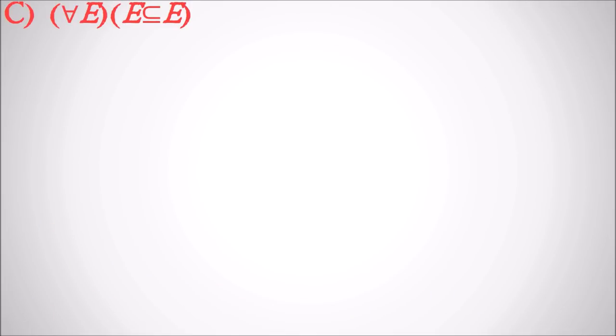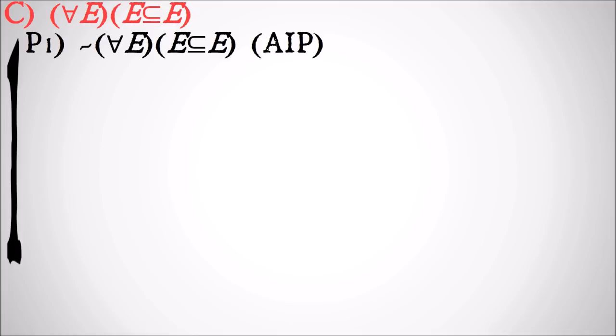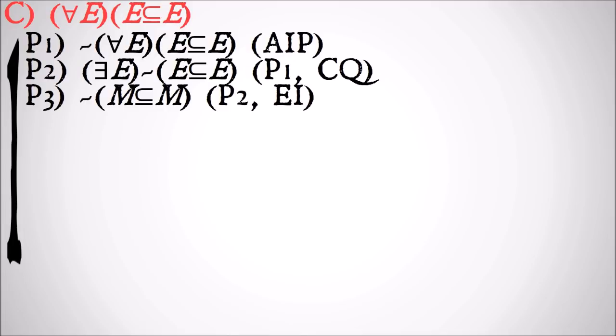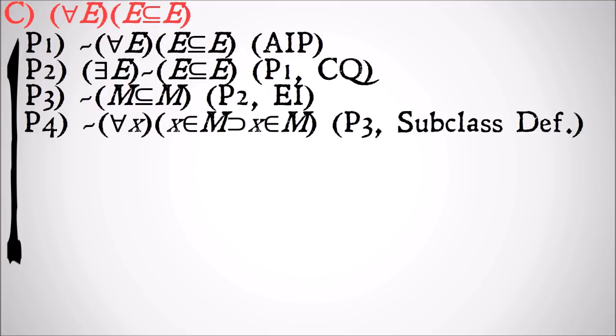So we're trying to prove for all E, E is a subclass of itself. We're going to do an assumed indirect proof, so we'll assume that it's false and show that leads to a contradiction. We'll do a change of quantifier to move that negation inside, then existentially instantiate E to M.